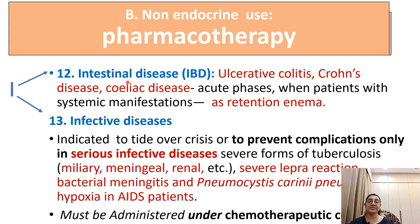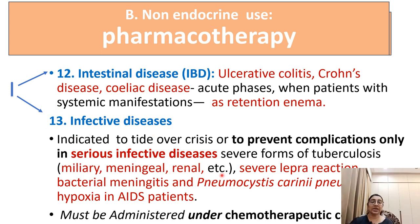'I' stands for intestinal and infective diseases. In intestinal diseases like ulcerative colitis, Crohn's disease, and celiac disease, corticosteroids are used as a retention enema. In serious infective diseases like miliary, meningeal, and renal tuberculosis, corticosteroids are used. However, in intestinal tuberculosis, steroids are contraindicated as they can cause perforation. They are also used in severe leprosy reaction, bacterial meningitis, pneumocystis pneumonia, and in AIDS, and must be administered under chemotherapeutic cover.